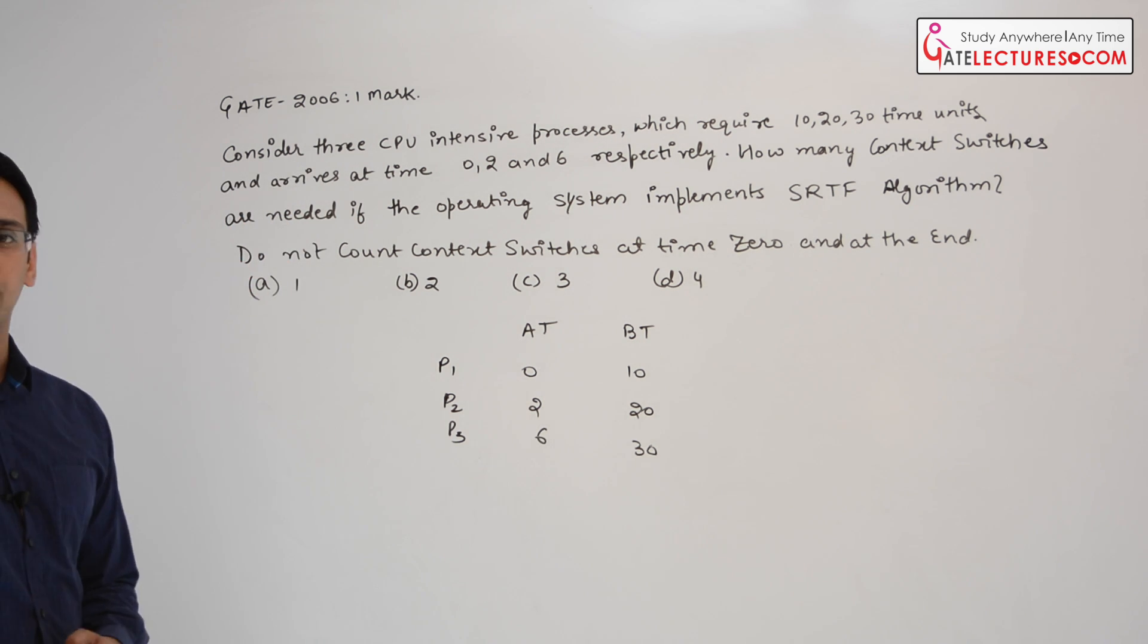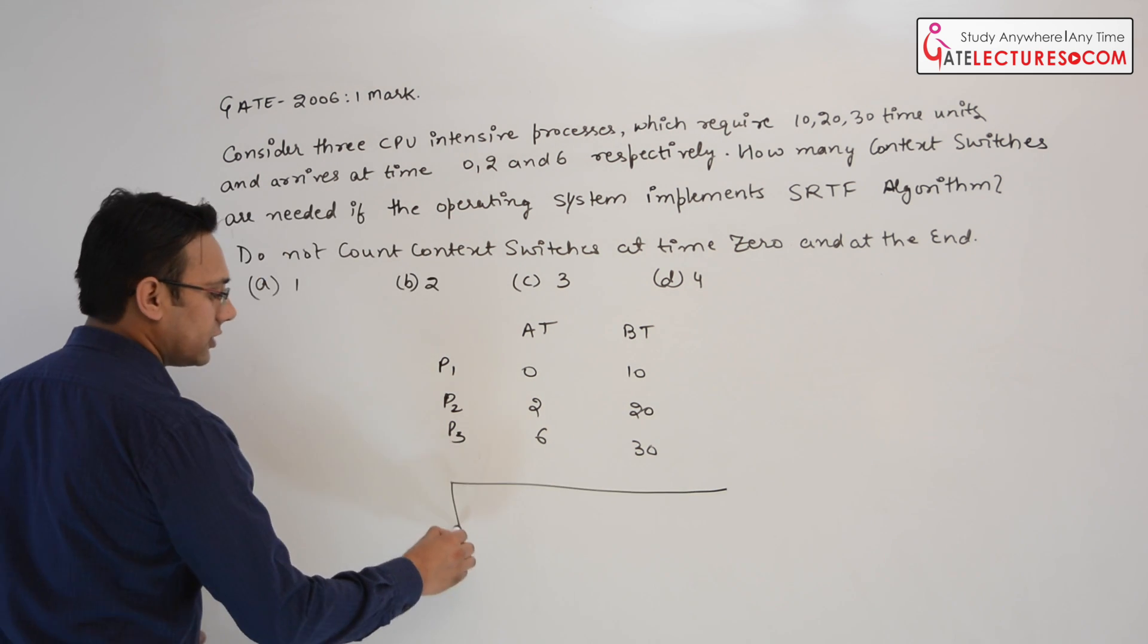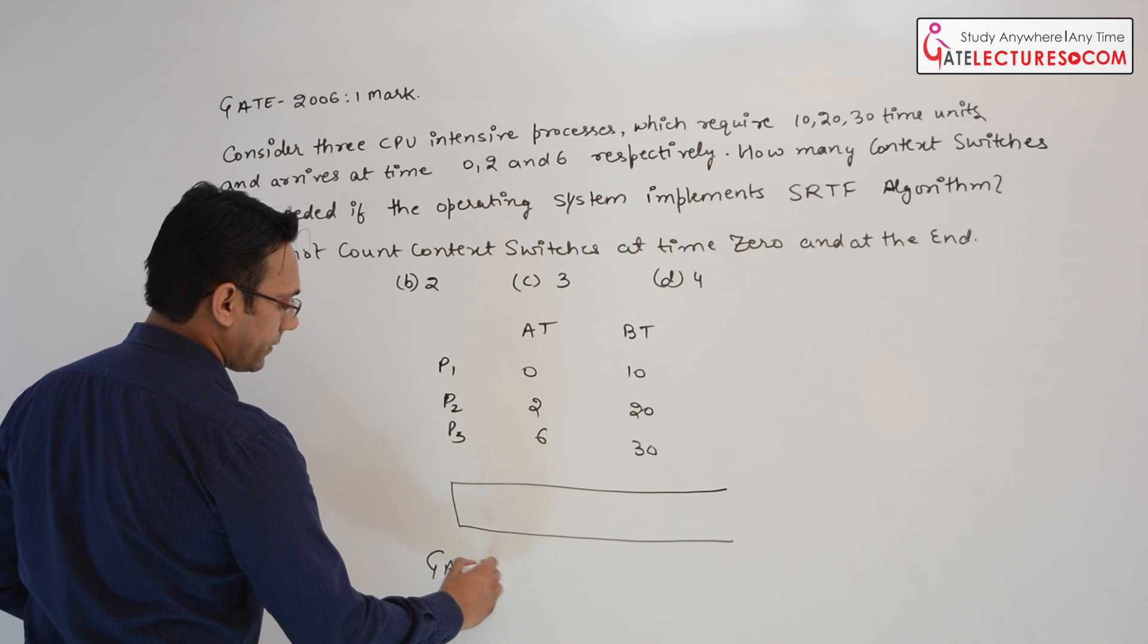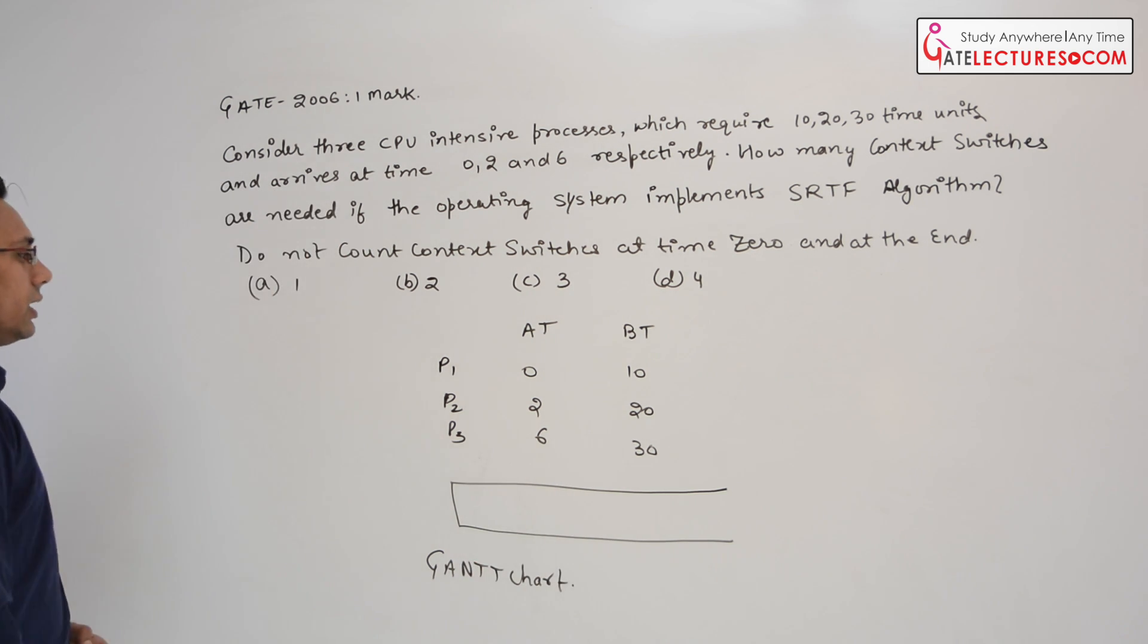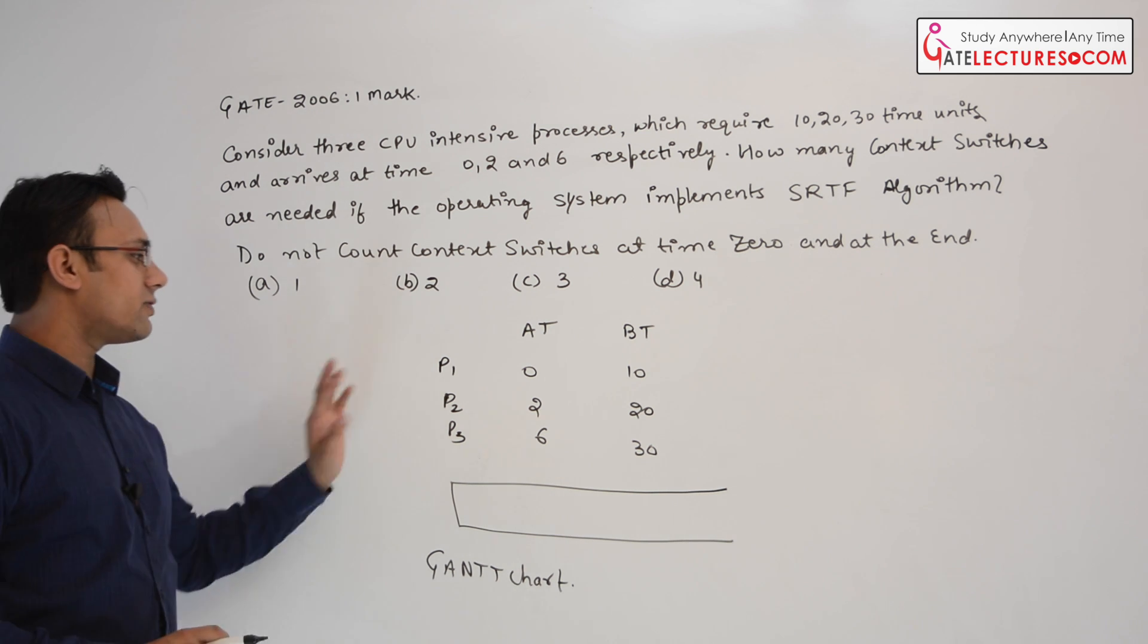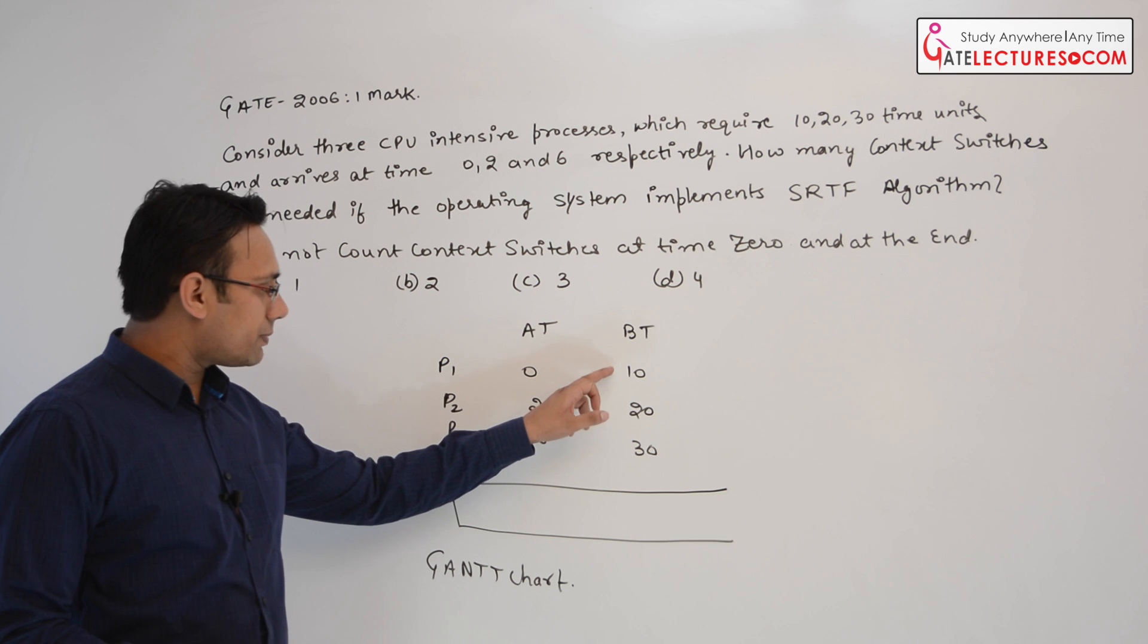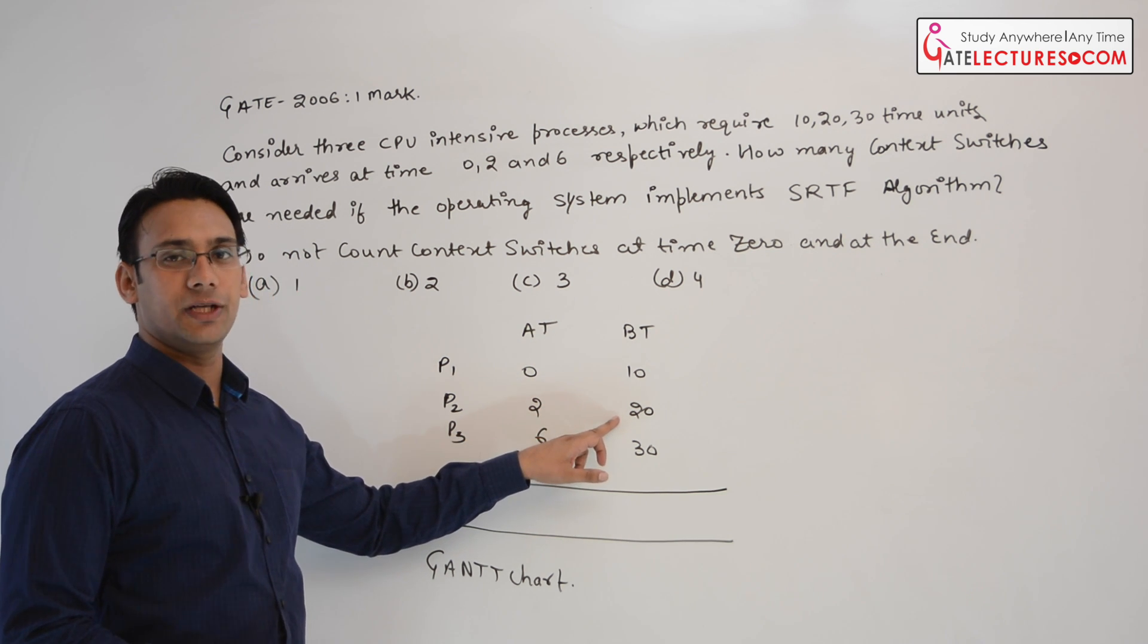Now they are asking what are the number of context switches which happen. Let us make a Gantt chart for this. So this is the Gantt chart. Now at time 0, only one process will be there which is the process P1. So as you can see the process P1 is the smallest process. The next smallest is process P2.